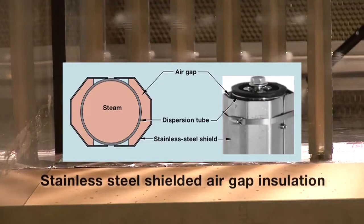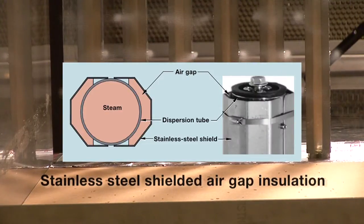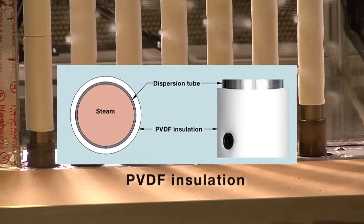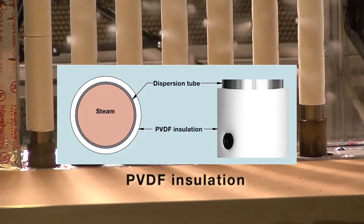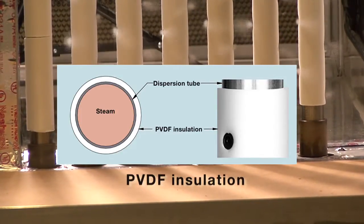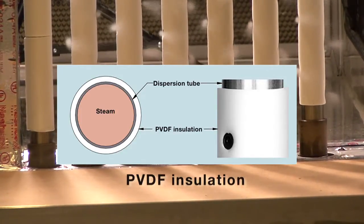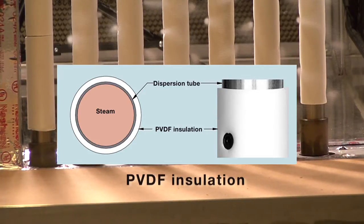The dispersion assembly on the left insulates tubes with stainless steel shields, which creates an approximate one quarter inch air gap between each tube and its shield. The dispersion assembly on the right insulates tubes with one-eighth inch thick PVDF insulation, which traps air in thousands of small pockets.